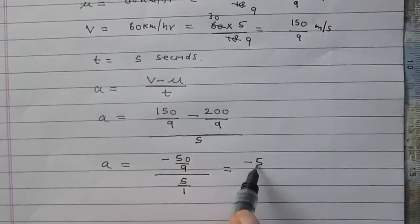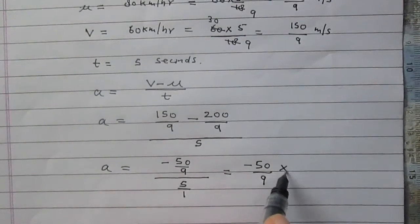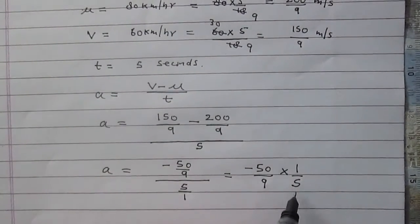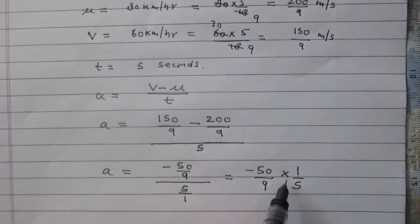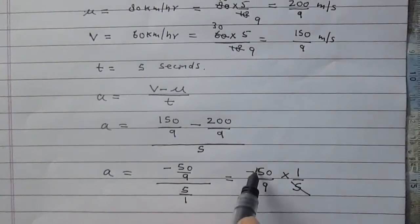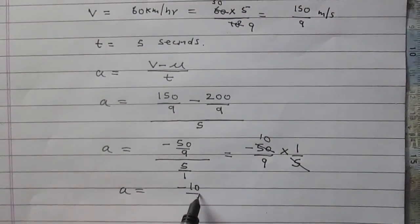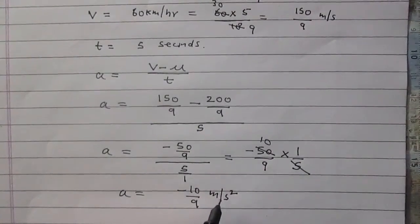The numerator will remain as it is and denominator will become reciprocal and multiply with the numerator, which is 1 by 5. So 5 upon 1 will become 1 upon 5 and it will multiply to the numerator. Finally, we will get acceleration A is minus 10 upon 9 meters per second squared.